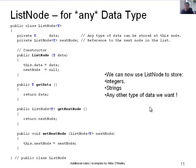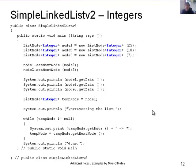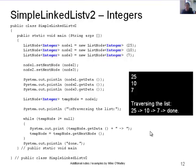Let's see the generic class in action with integers: ListNode<Integer> node1 = new ListNode<Integer>(25), node2 = new ListNode<Integer>(10), node3 = new ListNode<Integer>(7). The only other change needed is to define tempNode as ListNode<Integer> as well. Everything else stays the same — traversing the list still shows 25, 10, and 7 as before.